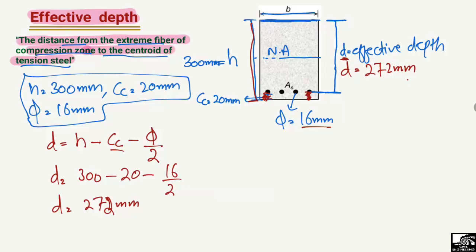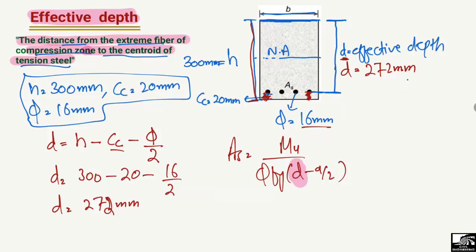This effective depth is later used in the design of reinforcement. For example, in the reinforcement design equation: As = Mu / (fy × (d − a/2)), we clearly see that the effective depth D is used. It is therefore a very important parameter in structural design, which is why we need to know what it is and how to find it.